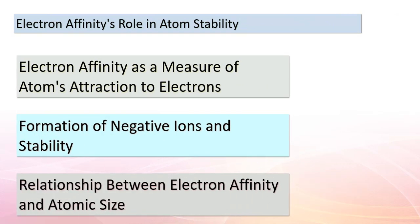Today, we're delving deeper into electron affinity and its impact on atom stability. When an atom has a higher electron affinity, it has a stronger attraction to electrons, resulting in the formation of negative ions which are more stable. Interestingly, there's a connection between electron affinity and atomic size. As we move from left to right across the periodic table, atomic size generally decreases and electron affinity tends to increase. Smaller atoms have stronger electron affinities because their outer electrons are closer to the nucleus, leading to higher attraction.